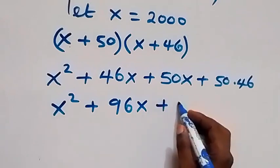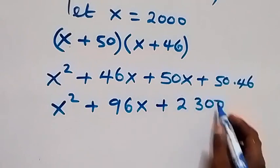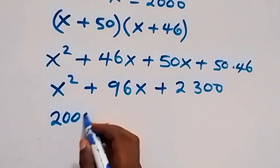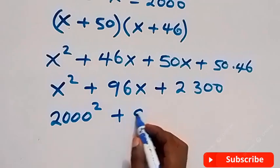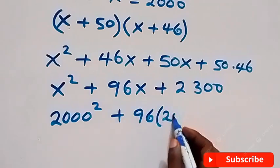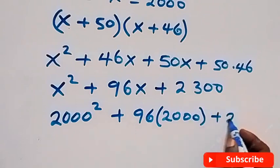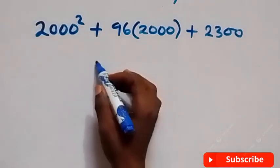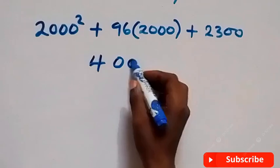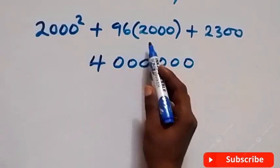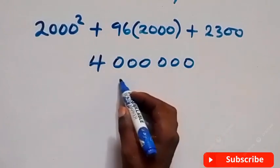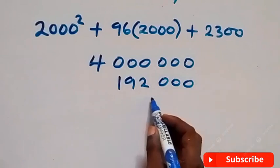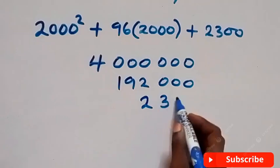From here, we substitute the value of x back in. We have 2000 squared plus 96 times 2000 plus 2300. 2000 squared is the same as 4,000,000. Then 96 times 2000 gives us 192,000. And we have 2,300.